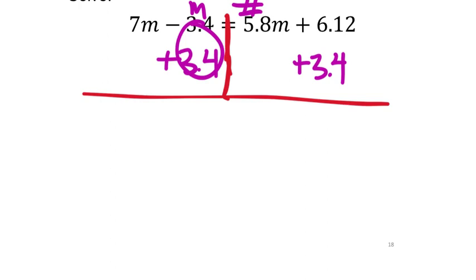But you'll notice that I have aligned that with the 6.12. That's because those are like terms. I would definitely not want to put the plus 3.4 below the M term because they are not like terms to combine. So what do I get from that? 6.12 positive plus 3.4, 9.52. Seems like an unusual number.